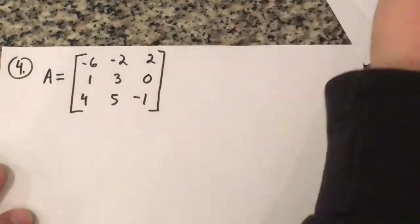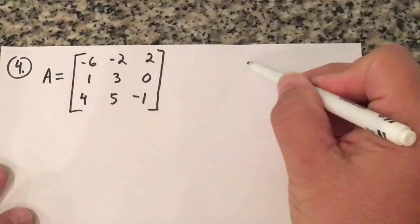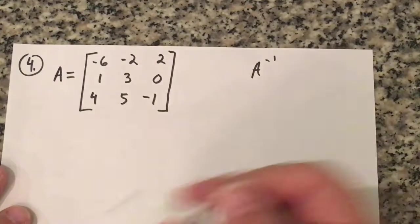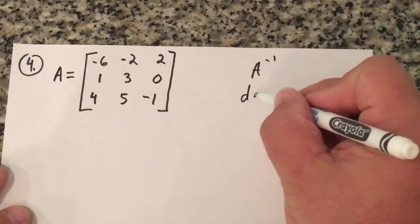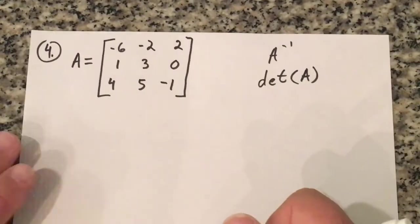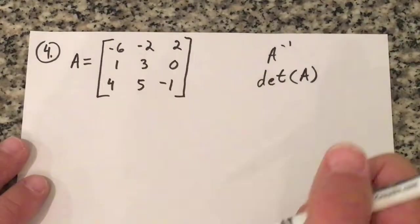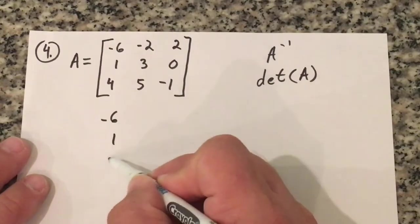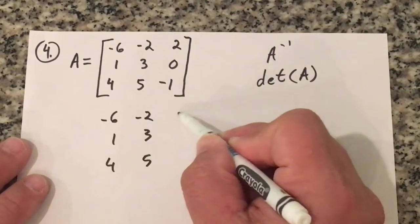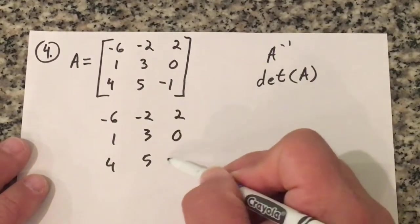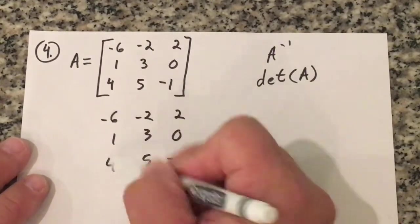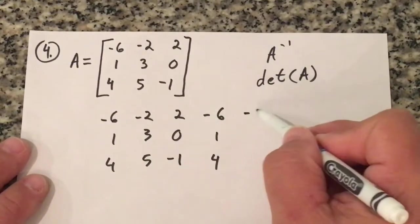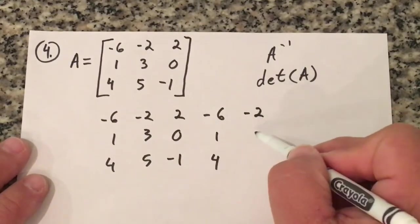I'm expecting to find the inverse of this thing. The first thing I want to do is find the determinant of A. So what I need to do is rewrite this: negative 6, 1, 4, negative 2, 3, 5, 2, 0, negative 1 — and then repeat the first column and repeat the second column.